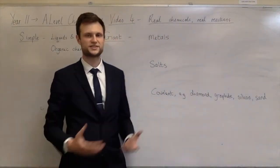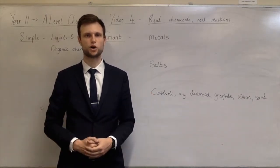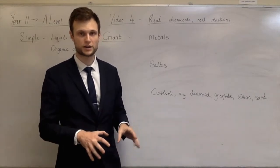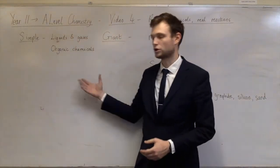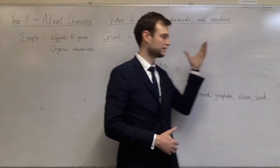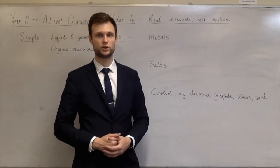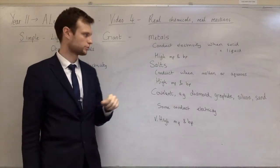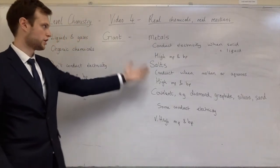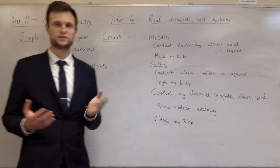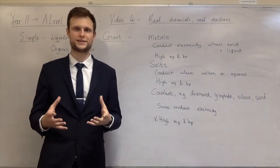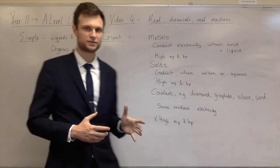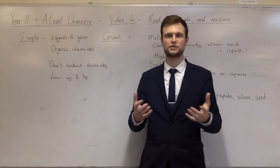Quite often in A-level chemistry, people won't know what state something is in. For example, what state is calcium bromide in? Well, calcium bromide is a salt, and salts have high melting and boiling points, so it's a solid. If anything is on the list of metals, salts, or giant covalent substances - apart from mercury - it's a solid. We spend a lot of time talking about these properties: what affects melting and boiling point, what affects conductivity - for metals, salts, giant covalent, and simple covalent molecules. Don't forget that all of these abstract molecular concepts link to things you can literally see and understand through common sense in the real world.